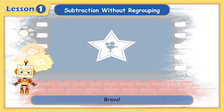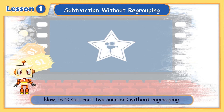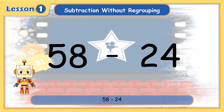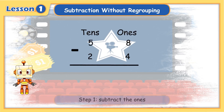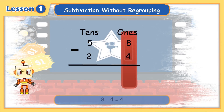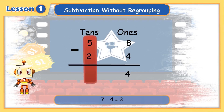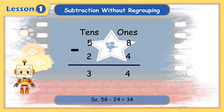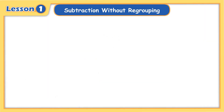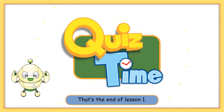Bravo! Now let's subtract two numbers without regrouping. How can we solve 58 minus 24? Step 1: subtract the ones. 8 minus 4 equals 4. Step 2: subtract the tens. 5 minus 2 equals 3. So, 58 minus 24 equals 34. Excellent, children! That's the end of lesson one.